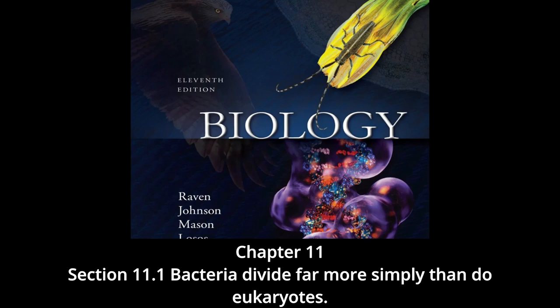Section 11.1: Bacteria divide far more simply than do eukaryotes. In bacteria, which are prokaryotes and lack a nucleus, cell division consists of a simple procedure called binary fission — literally splitting in half — in which the cell divides into two equal or nearly equal halves. The genetic information, or genome, replicates early in the life of the cell. It exists as a single circular double-stranded DNA molecule. Fully stretched out, the DNA of a bacterium like Escherichia coli is about 500 times longer than the cell itself.